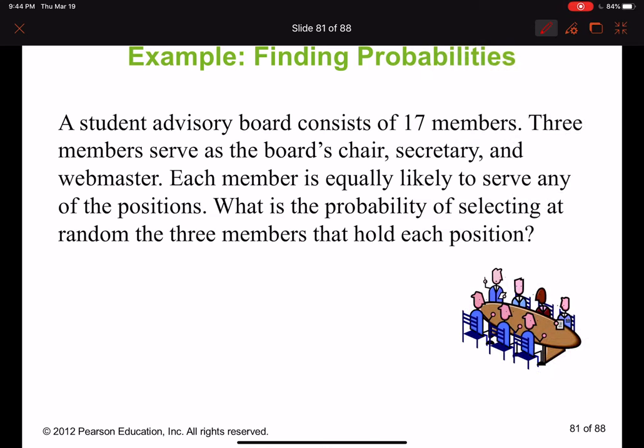Next one. A student advisory board consists of 17 members. A member serves as the board chair, secretary, and webmaster, three of them. So three out of 17. Each member is equally likely to serve any of the positions. What is the probability of selecting at random the three members that hold each position?